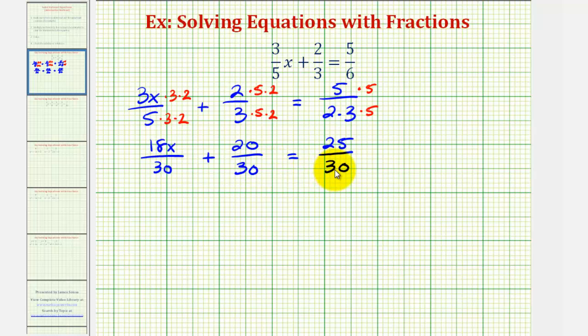Now that we've obtained the least common denominator, we're going to clear the fractions by multiplying both sides of the equation by the LCD, which is 30. Notice for every product we'll have 30 over 30, which will simplify to 1, clearing the fractions. This will leave us with 18x for the first product, the second product would just be 20, on the right side we just have 25.